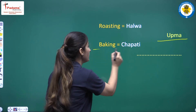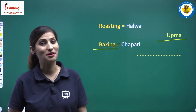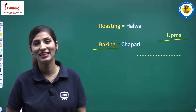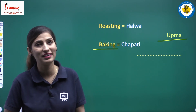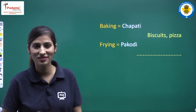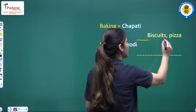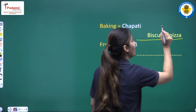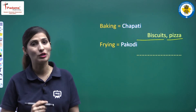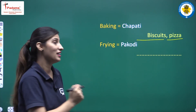Next one is baking. The example is chapati — chapati ko hum sekte hai, yani bake karte hai. Can you tell me some more examples? The examples are biscuits and pizza. These items are made using the baking cooking method.